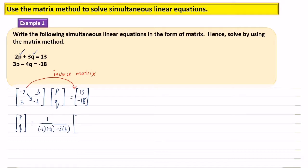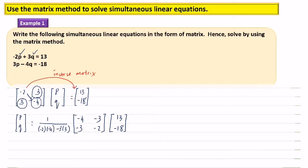And don't forget: move negative 4 to the top and negative 2 goes down. The positive numbers become negative and positive become negative. Then copy 13 and negative 18. Now we count the determinant — the determinant equals negative 1.